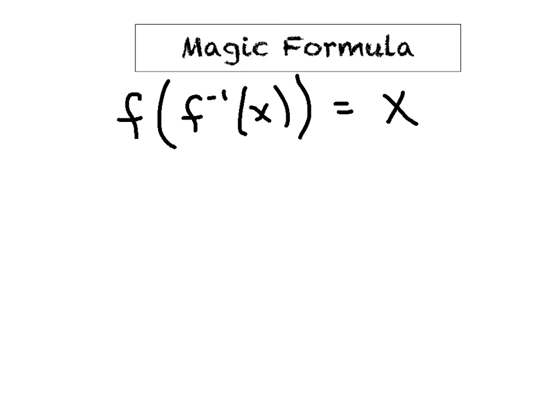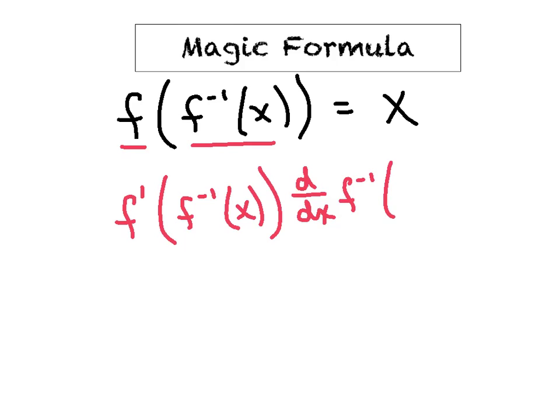It got pretty interesting on the right side because we had the outer function f, and then we had the inner function f inverse, and so to derive that side, we had to do some chain rule. So we've got the derivative of the outer function, leave the inner one alone for now, and now we need to take the derivative of what was inside. Because the notation was so overwhelming, we literally said d/dx instead of trying to throw a prime on top of that negative one.